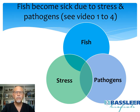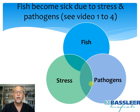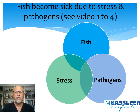Fish become sick due to stress and pathogens. I explain that in more detail in videos 1 to 4, which you can see at my YouTube channel. Because fish live in an environment where stress can be around, caused by humans or by the filtration, the water, and because there are pathogens around. The stress has an impact on the fish, weakens the fish, so the pathogens can cause an infection.